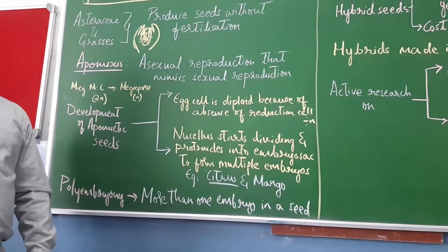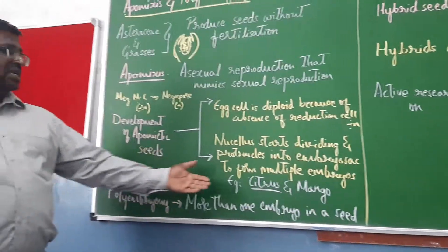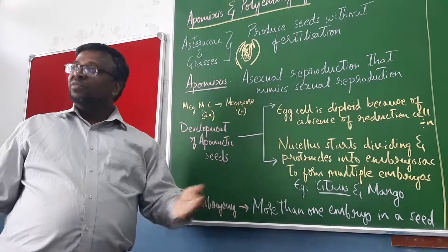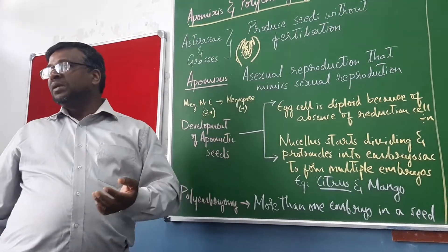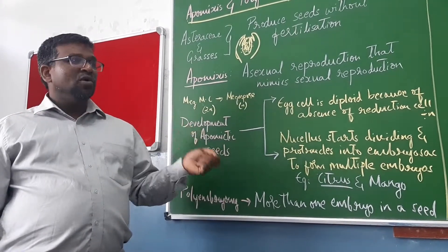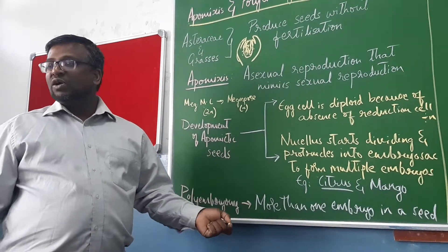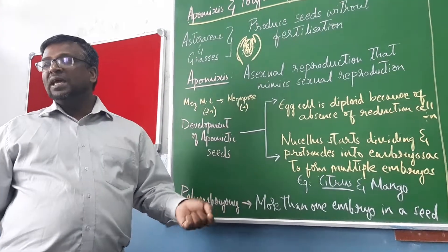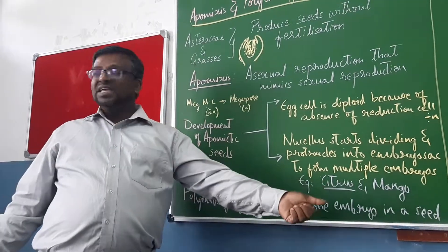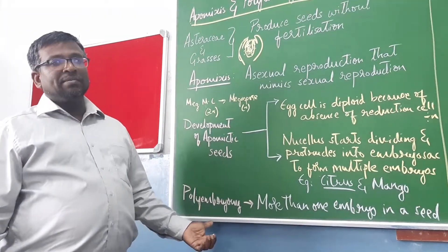Generally you find one embryo per seed. But in plants like citrus and mango, you find more than one embryo per seed or ovule. The presence of more than one embryo in a seed is called polyembryony.